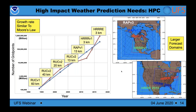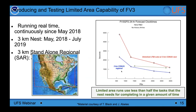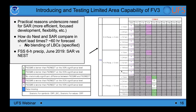Moving to finer grid spacings over the last several decades has driven compute resources to grow by orders of magnitude in grid points. Considering high-resolution ensemble systems at 3 km, we're dealing with on the order of billions of grid points. The demand far exceeds current compute capacity — Moore's Law is not holding — motivating the use of limited area versions of FV3. Testing shows limited area runs use less than half the tasks needed for a global nest.